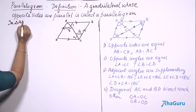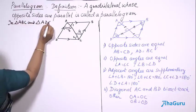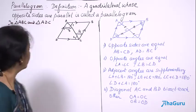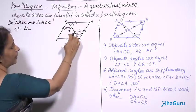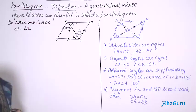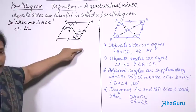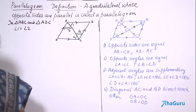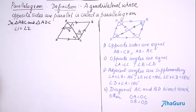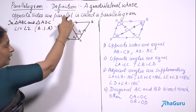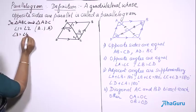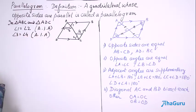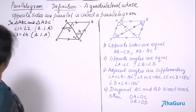This diagonal has divided the parallelogram into two triangles. I can prove the two triangles to be congruent. In triangle ABC and triangle ADC, I have to prove them congruent. Angle 1 is equal to angle 2 — why? They are alternate interior angles because AB is parallel to CD, and AC acts as the transversal. Similarly, since AD is parallel to BC, AC again acts as transversal, and angles 3 and 4 also become alternate interior angles, so angle 3 is equal to angle 4.